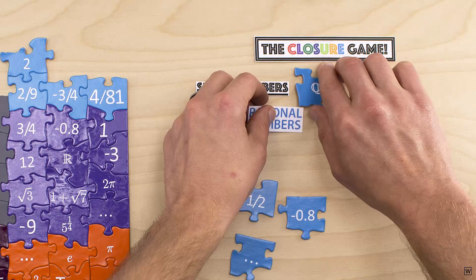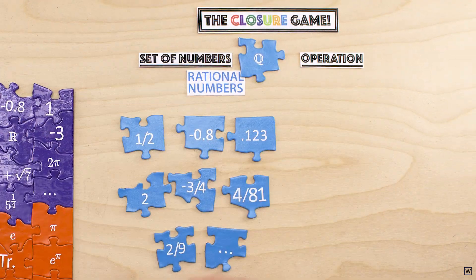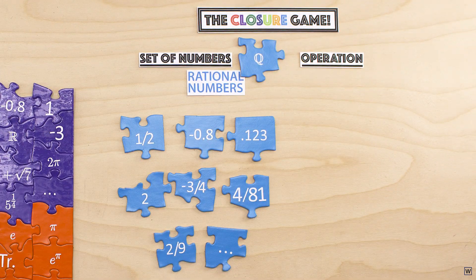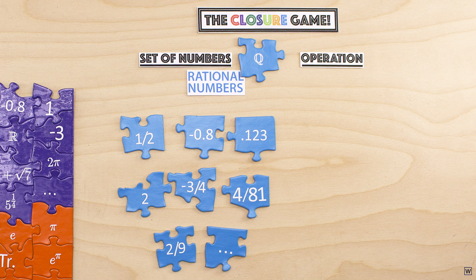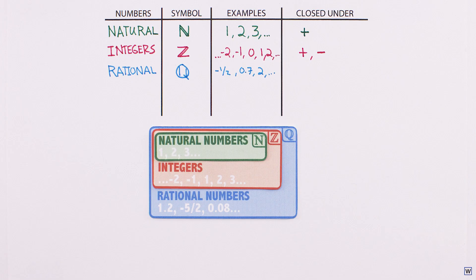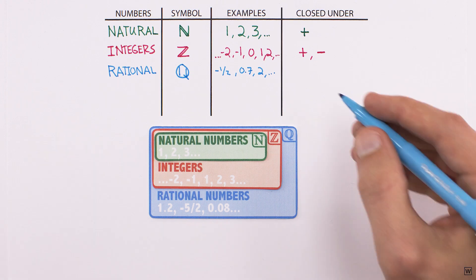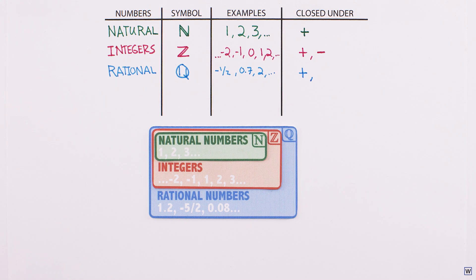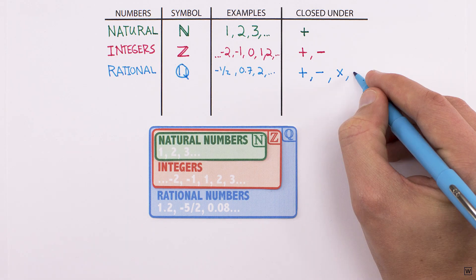Let's recap. So far, we've made it to the set of rational numbers, which includes numbers like 1, 0, minus 5, and minus 2 thirds. What operations are the rational numbers closed under? Well, any two rational numbers added together yield another rational number, so we can say that the rational numbers are closed under addition. We can say the same for subtraction, multiplication, and division.